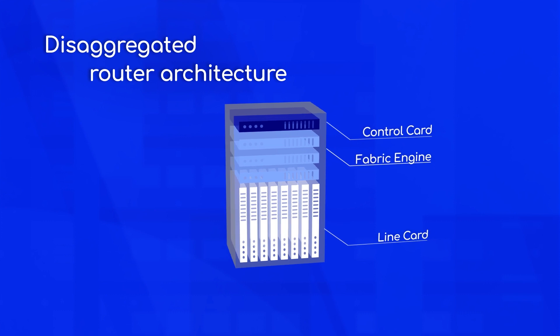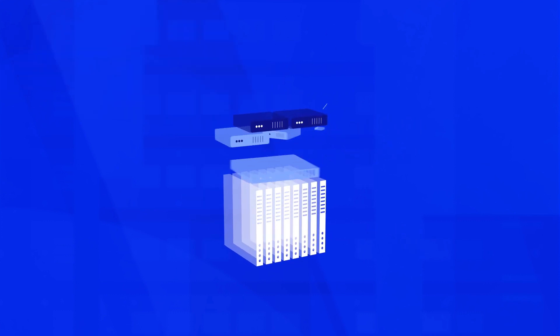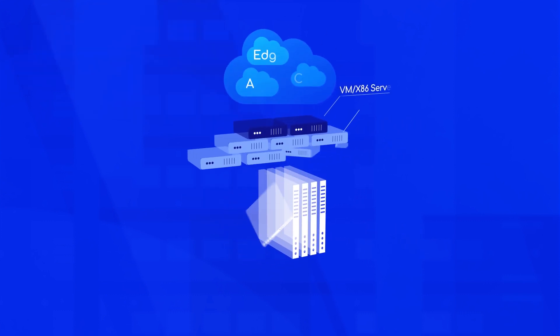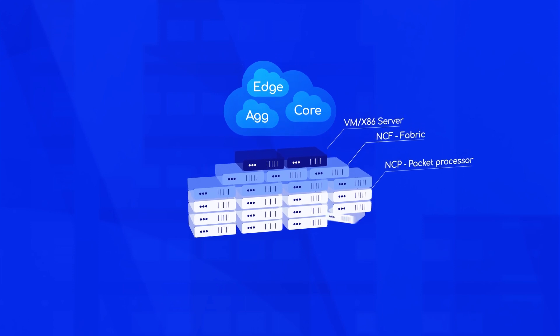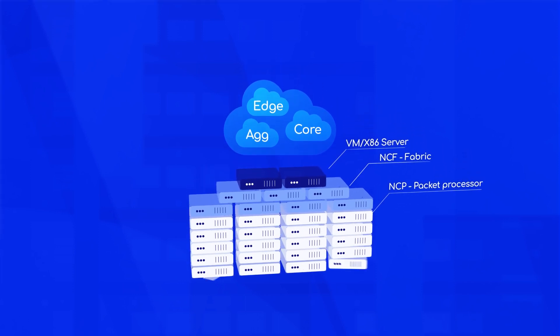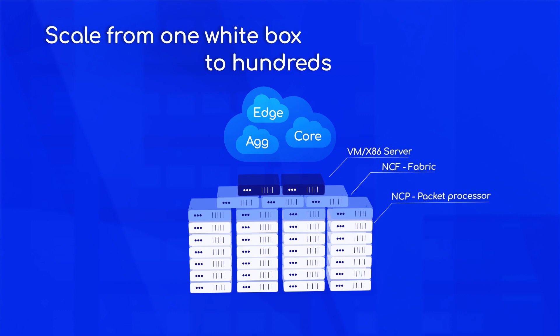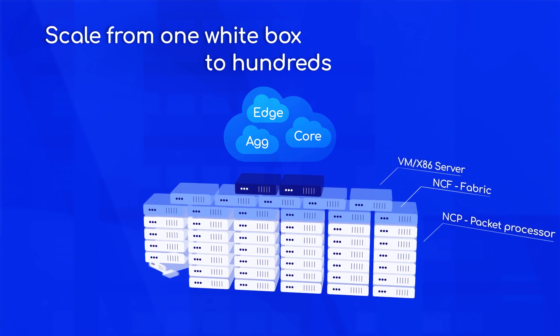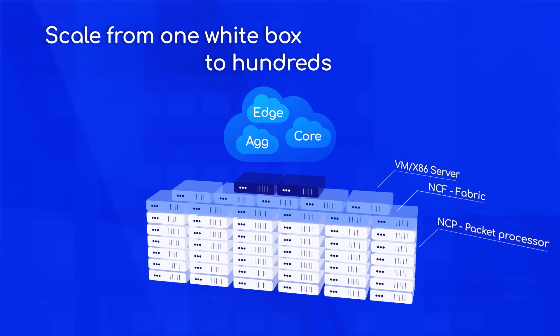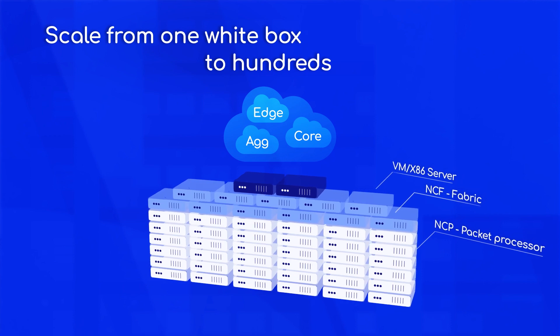Second, it disaggregates the control plane from the data plane. The data plane is based on two white box building blocks: NCP and NCF. A single NCP is a four terabit per second router, while clustering NCPs and NCFs together creates any size router up to 768 terabits per second. This creates a very flexible router model.